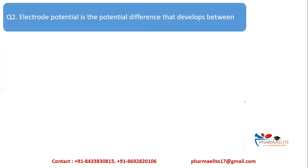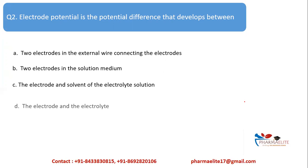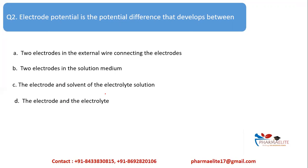Next question: Electrode potential is the potential difference between which of the following — two electrodes in the external wire, two electrodes in the solution medium, two electrodes and the solvent of electrolyte solution, or the electrode and the electrolyte? As we saw in the first slide, electrochemistry studies the reaction between electrode and electrolyte. The correct answer is option D — the electrode and the electrolyte.